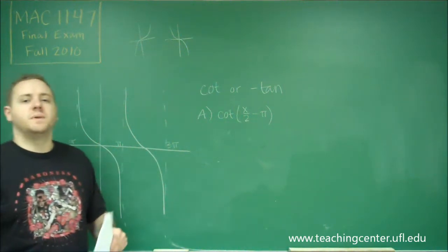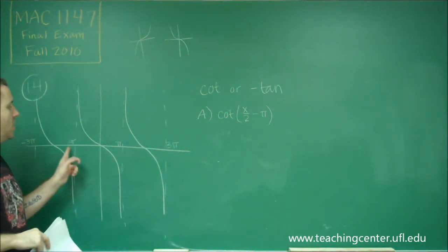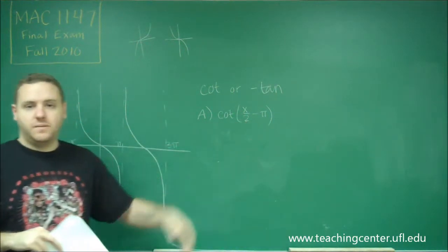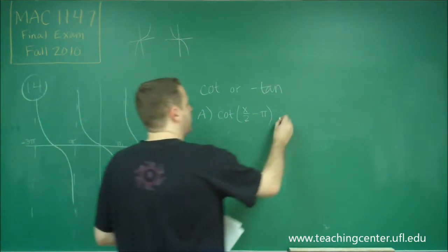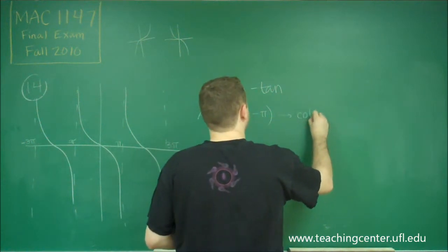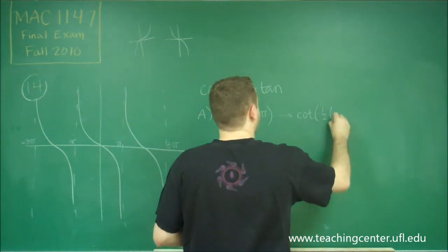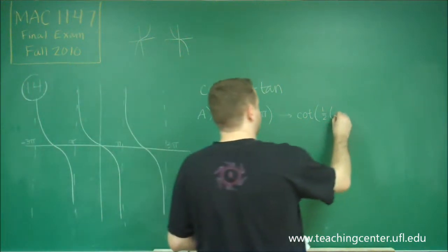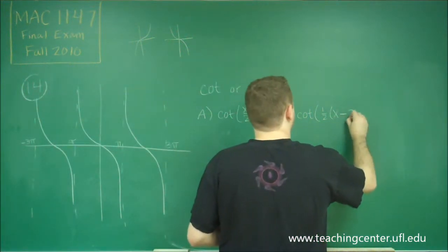Now the x/2 part should make sense, because like I said at the beginning, we have double the period that we normally have, so there would have to be a 1/2 in front of that. To find our phase shift, remember you always want to factor out the coefficient on the x, so we'd have 1/2 in front, so that would give us x minus 2π.